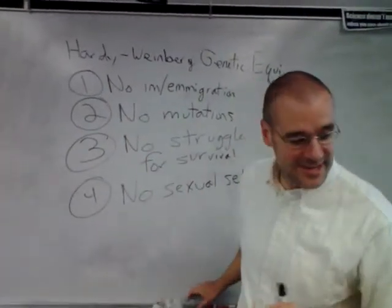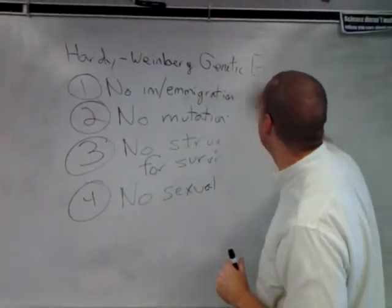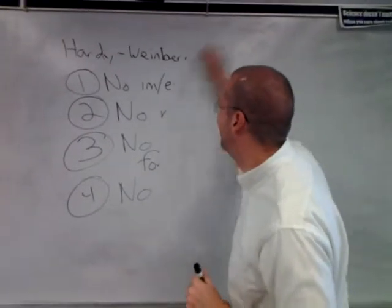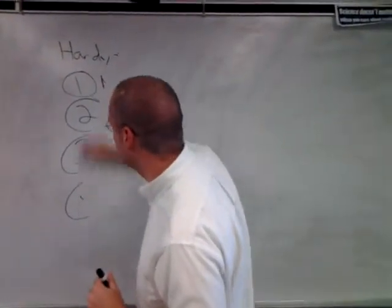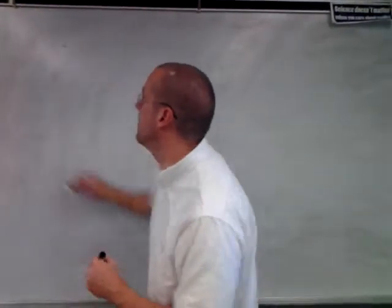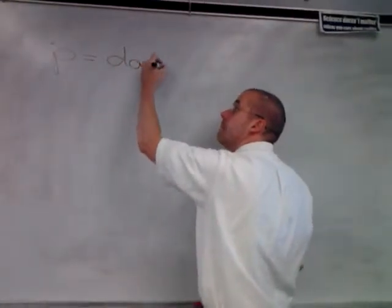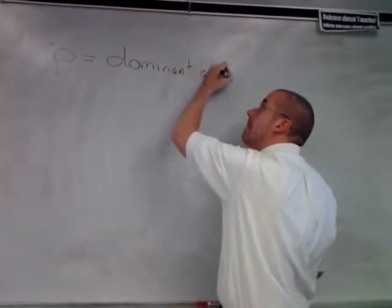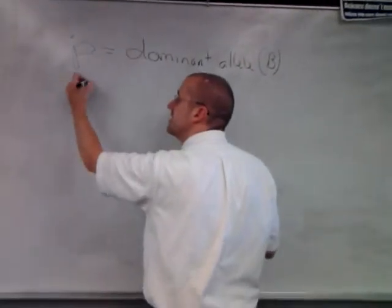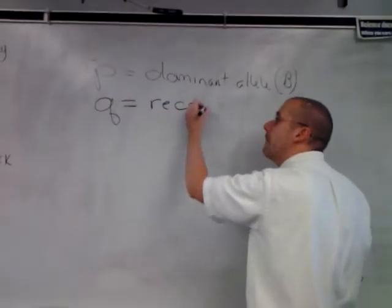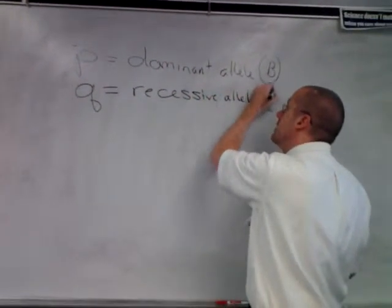So I just want to bring you through the equations. First thing, we're going to let the letter P be a dominant allele, and we'll call that B. The letter is unimportant, the capitalization is. Q is your recessive, and we're going to make that be a lowercase b.